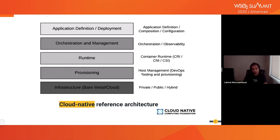The top layer is the application definition layer, which defines the application composition, application-specific configuration, deployment properties, image repositories, and continuous integration and delivery. Cloud native application developers are mainly engaged with these top layer functionalities.